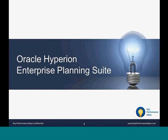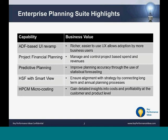This section discusses products within the Oracle Hyperion Enterprise Planning Suite. Products covered in more detail include Planning, Project Financial Planning, Predictive Planning, integrated planning with Hyperion Strategic Finance, and Hyperion Profitability and Cost Management (HPCM). Highlights include a better user experience with the ADF-based user interface revamp, a new module for project-based spend and revenues, improved planning accuracy through statistical forecasting via Predictive Planning, strategy alignment using Hyperion Strategic Finance with SmartView, and detailed cost and profitability insights with HPCM micro-costing.